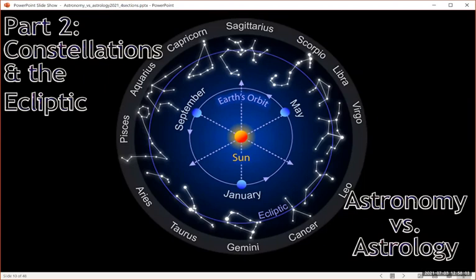This is part two in a series of videos about astronomy versus astrology. In this video, we'll follow on from talking about the celestial sphere and talk about constellations and the ecliptic.